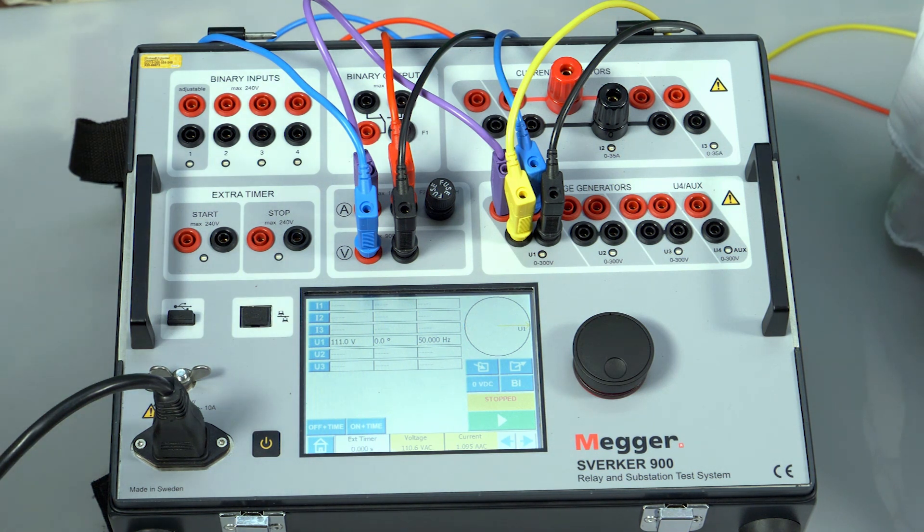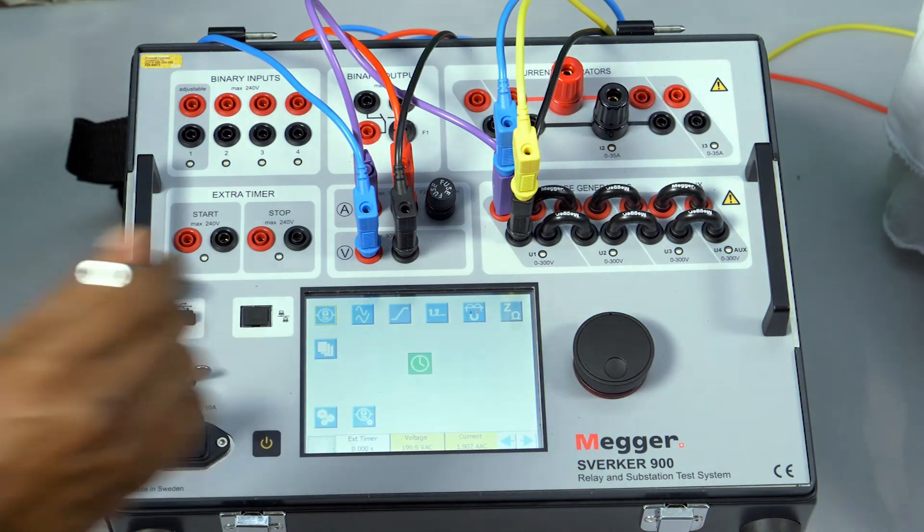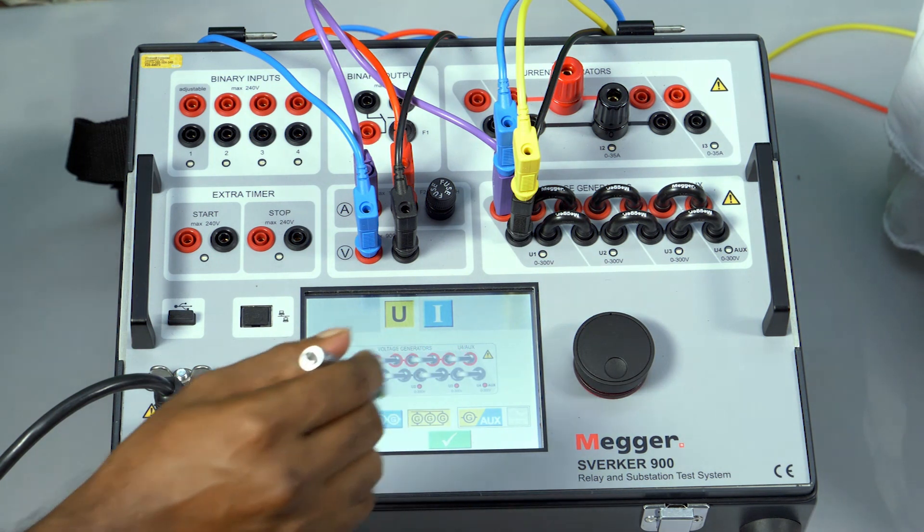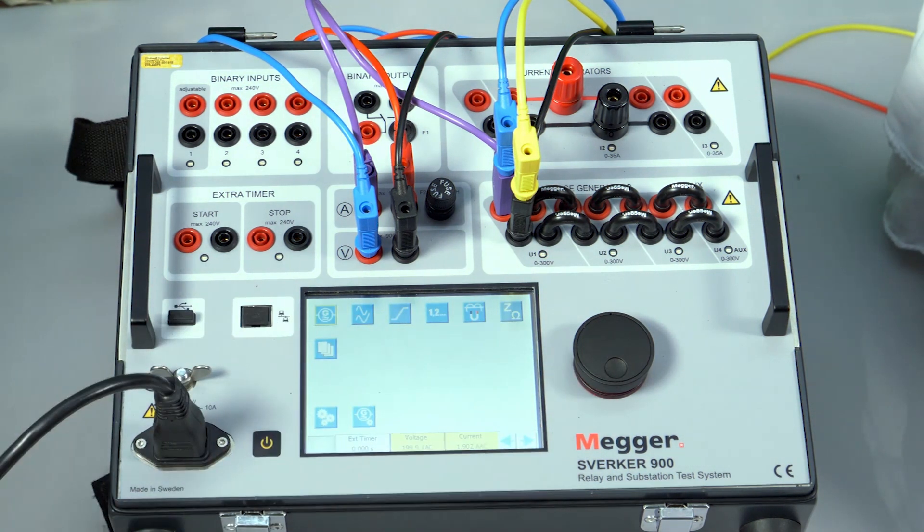Now let us connect the voltage generators in parallel to get the high burden. So let me click on the generator selected for parallel connection. Let me put a tick mark. Generator source.